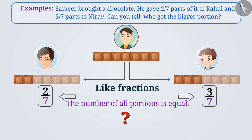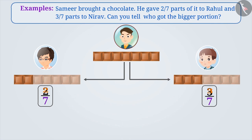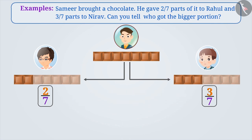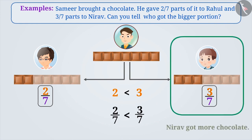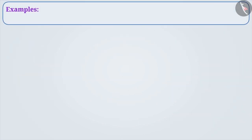If we have to compare them, then how will we do it? Since the numerators of these fractions are different, it means the number of parts taken is different. Numerator 3 of 3 by 7 is greater than the numerator 2 of 2 by 7. Therefore, the fraction 3 by 7 is greater than the fraction 2 by 7. Thus, Nirav got more chocolate.